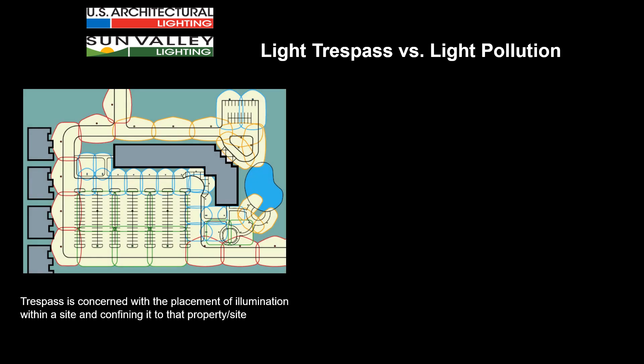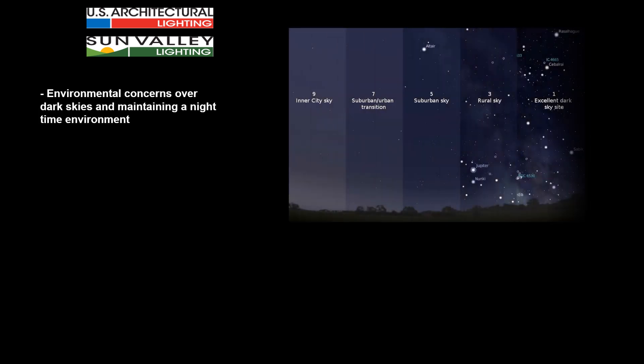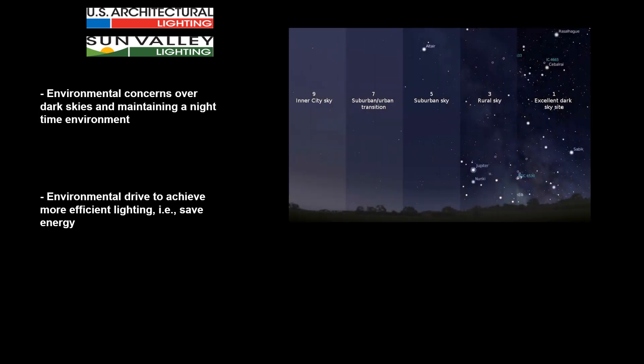Light trespass is concerned with the placement of illumination within a site and confining the output to that site rather than allowing it to go onto neighboring sites. Light pollution is concerned with keeping illumination aimed downward, not allowing stray light to brighten the nighttime sky. From an environmental concern, dark skies are desirable because it keeps the natural look in the environment, and certainly we like to look up into the sky and see the stars at night, which can be difficult in a downtown inner city environment. There is also an environmental drive to achieve more efficient lighting, because if we keep the light aimed down that comes out of a luminaire and not allow it to be wasted in an upward direction, we have a more efficient fixture.